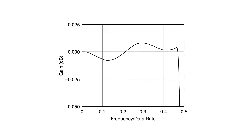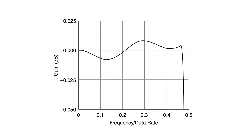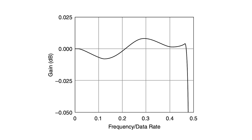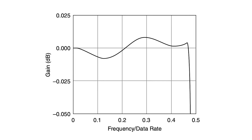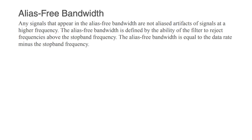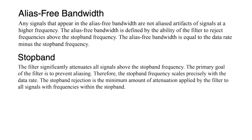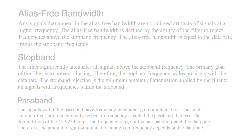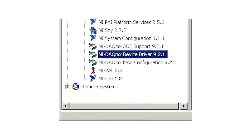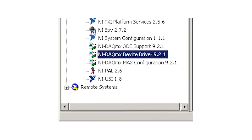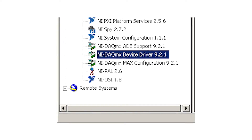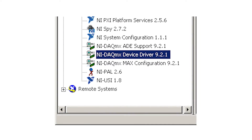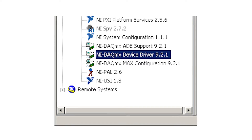The filters differentiate between signals dependent on the bandwidth or frequency range of the signal. The three most vital bandwidths to take into consideration are the anti-imaging, stop-band, and pass-band bandwidths. The NI-USB9234 is run using the NI-DAQmx 9.2, or later versions, driver software, which must be installed first.